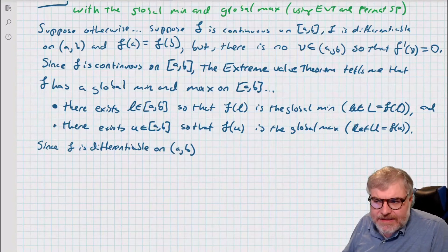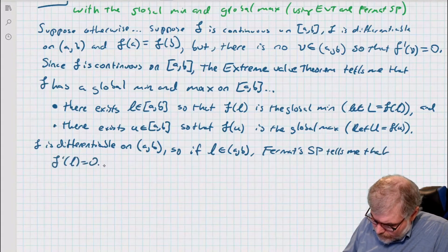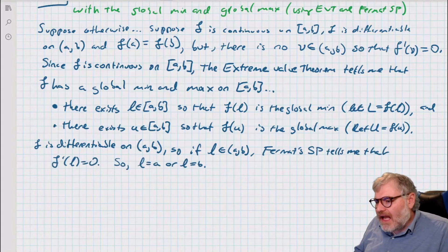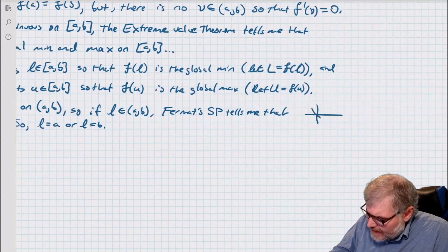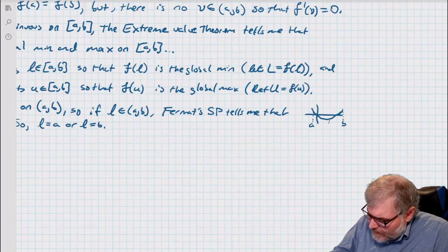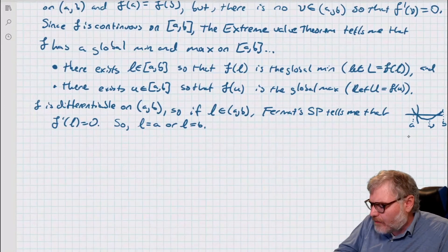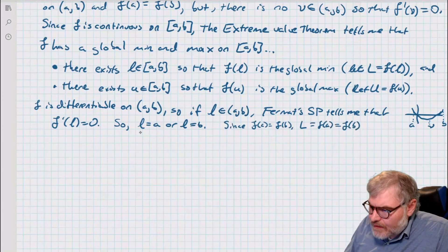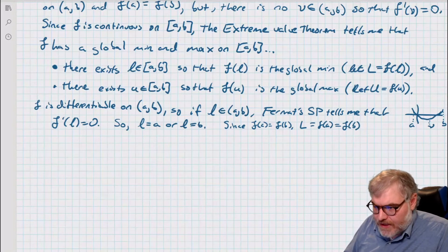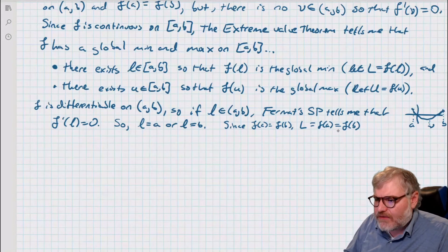Suppose that L is in the interior. Fermat's stationary point theorem tells me that if the min is in the interior, the derivative would be zero — and I can't have the derivative be zero, so this L must be at the endpoints. And remember the two endpoints are equal to each other: F(a) equals F(b), which means L equals F(a) equals F(b).